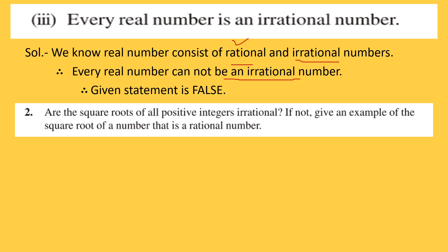Question number 2: Are the square roots of all positive integers irrational? If not, give an example of a square root that is a rational number. Let's take square root of 2. Its value is 1.4142135... and so on — it is non-terminating. We use 1.414 as an approximate value, but the exact value is non-terminating and non-repeating. Therefore √2 is an irrational number.